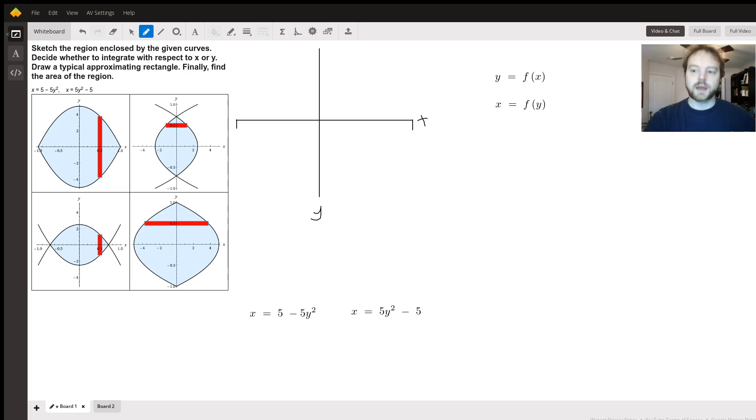So right off the bat, you're thinking, okay, they've done something weird. You might try to solve for x, or for y as a function of x, in which case you would get